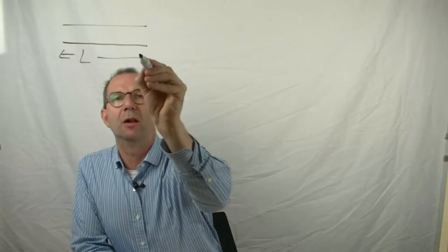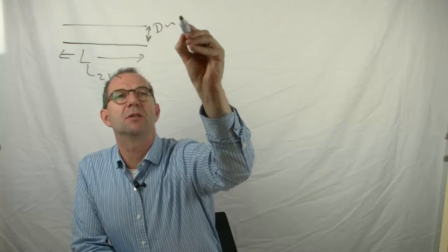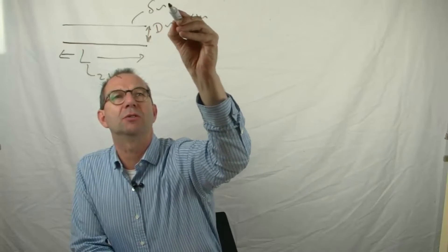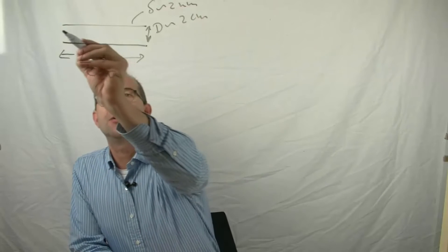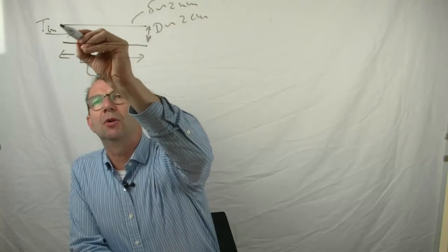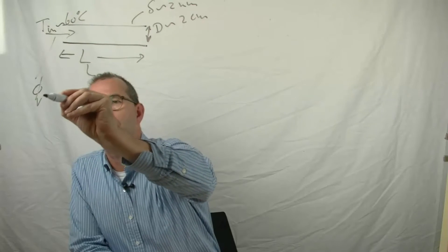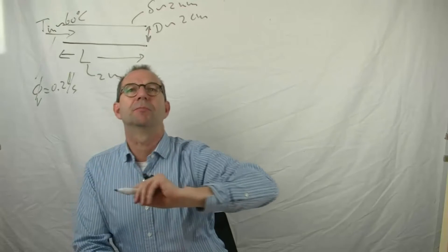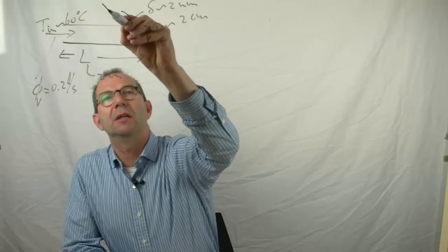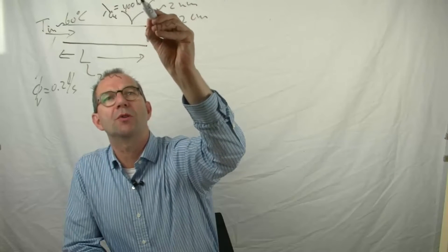We're going to look at part of such a copper pipe. That pipe has a length L of say 2 meters, a diameter d of say 2 centimeters, and a wall thickness delta of about 2 millimeters. Through that pipe water is flowing with an inlet temperature T_in of about 60 degrees Celsius at a flow rate V_V of 0.2 liters per second. The material is copper, so the thermal conductivity lambda of copper is pretty high — it is a good conductor — 400 watts per meter Kelvin.